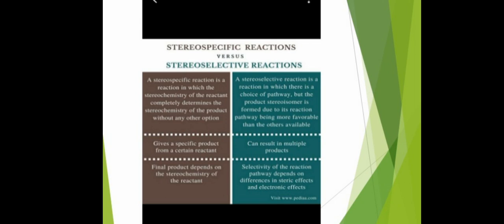Next we will discuss stereospecific reactions versus stereoselective reactions. A stereospecific reaction is one in which the stereochemistry of the reactant completely determines the stereochemistry of the product, without any other option. It gives a specific product from a certain reactant, and the final product depends entirely on the stereochemistry of the reactant.